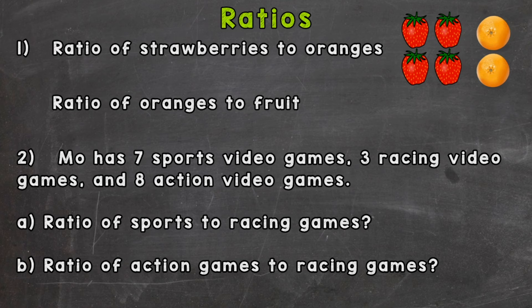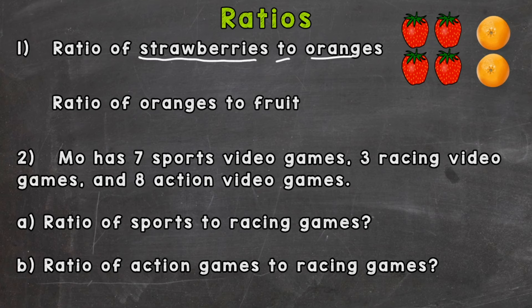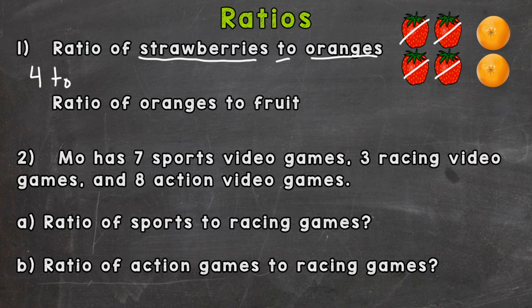Let's start with number one: the ratio of strawberries to oranges. With ratios, order matters — whatever comes first in your problem needs to come first in your ratio. So strawberries have to come first. Let's see how many strawberries we have: one, two, three, four — so we have four strawberries. To how many oranges? One, two — so four to two.